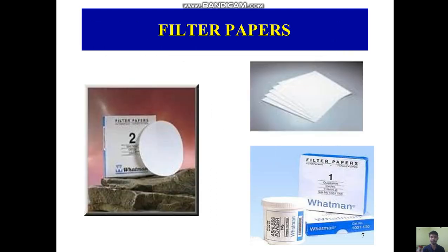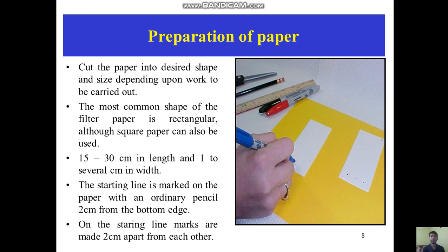These are the filter papers — this is Whatman filter paper; you can see these types of filter papers used for paper chromatography. For preparation of paper, we need to cut it into the desired shape or size depending upon the work to be carried out. The most common shape is rectangular, although square paper can also be used, typically 15 to 30 cm in length and 1 to several cm in width.